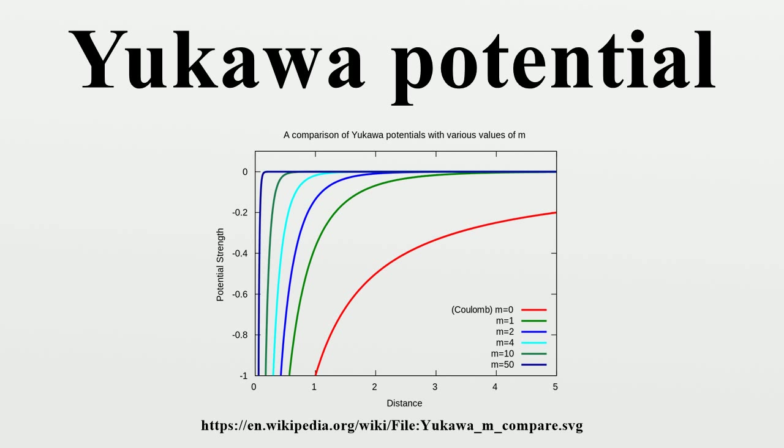The easiest way to understand that the Yukawa potential is associated with a massive field is by examining its Fourier transform. One has where the integral is performed over all possible values of the three-vector momentum k. In this form, the fraction is seen to be the propagator or Green's function of the Klein-Gordon equation.